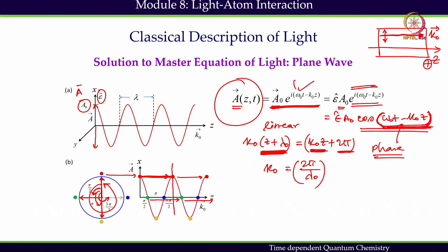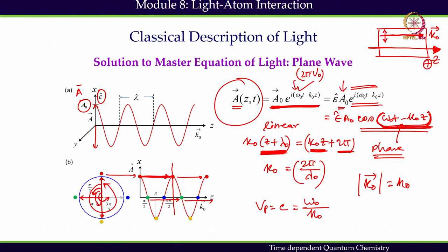The vector potential has an angular frequency ω₀, which equals 2πν₀ where ν₀ is the optical frequency. k₀ is the magnitude of the propagation vector — here we assume the z direction is the propagation direction with magnitude k₀. A₀ is the maximum amplitude of the vector potential. This light wave propagates with phase velocity vp = ω₀/k₀, and since we are working in vacuum, vp equals c. All these relations follow as consequences of the plane wave solution.